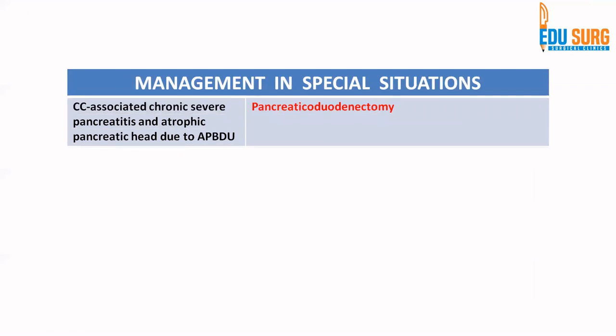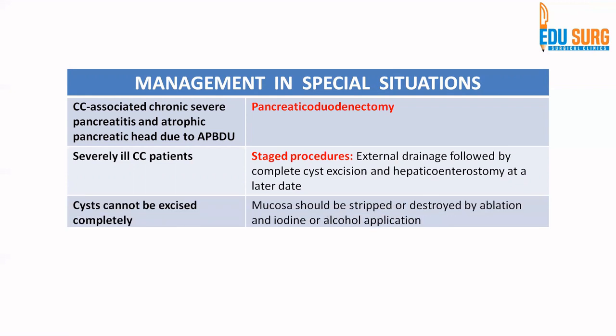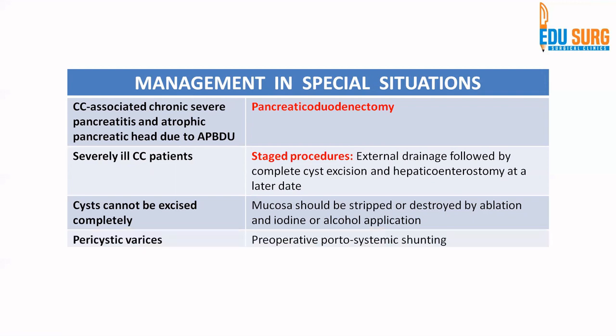Certain special situations require a change in plan. A choledocal cyst associated with atrophic pancreatic head and chronic pancreatitis from long-standing abnormal pancreatic biliary ductal junction may need a Whipple procedure. If the patient is severely ill, staged procedures may be needed — external drainage to let infection settle, then complete cyst excision with hepaticojejunostomy later. In cases with severe inflammation where the cyst cannot be separated from the portal vein or hepatic artery, at minimum the mucosa should be stripped or destroyed by ablation to reduce cancer risk, rather than risking injury to vascular structures.